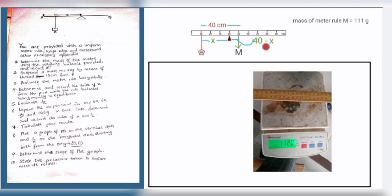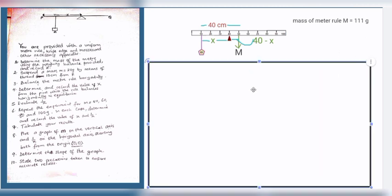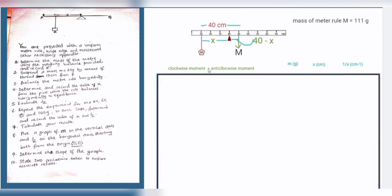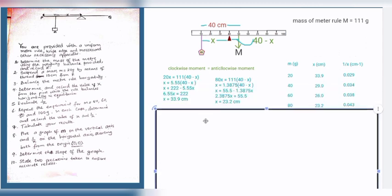Now, I have already done the manipulation. Using the principle of moment, we are going to have this. So using the principle of moment, I'm going to have clockwise moment equals anticlockwise moment. So the mass times x, that is 20 grams times x, must be equal to the mass of the metal rule, which is 101 grams, times 40 minus x.